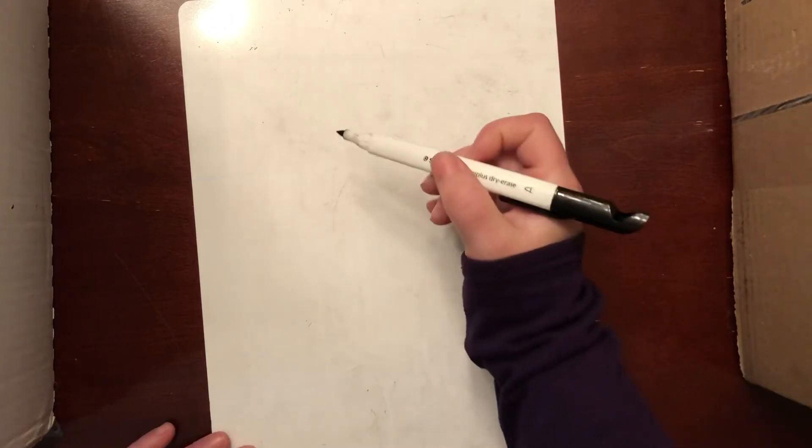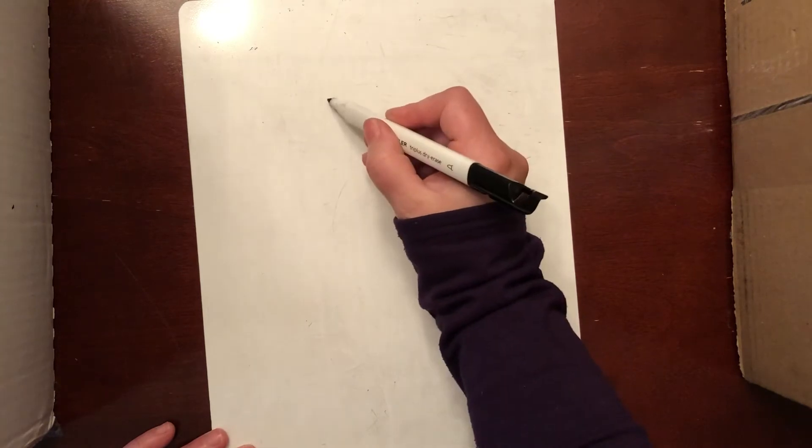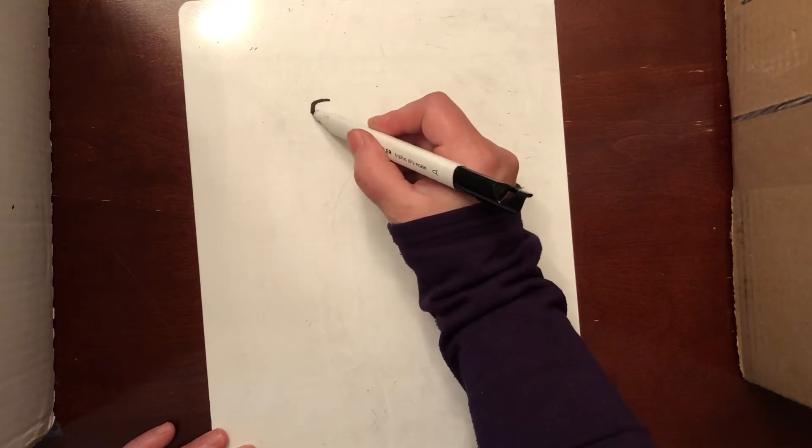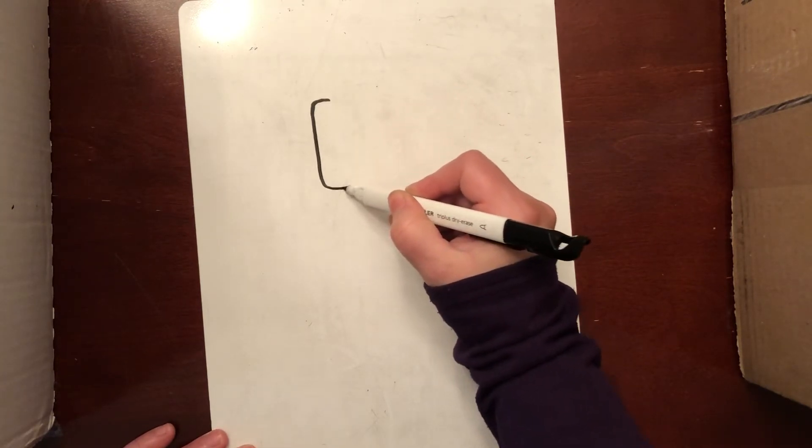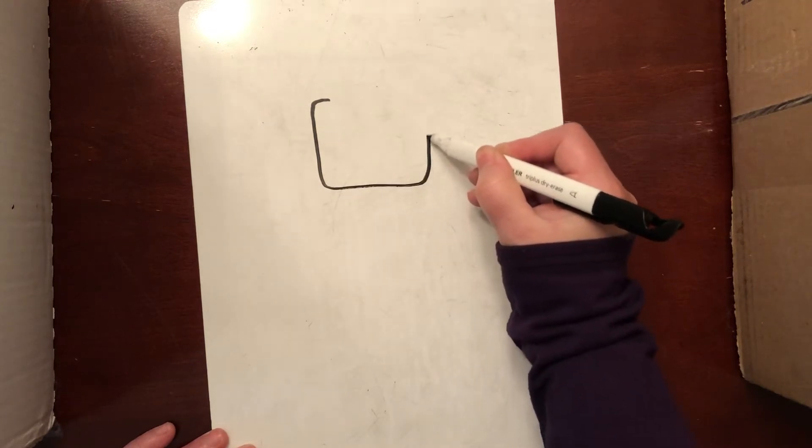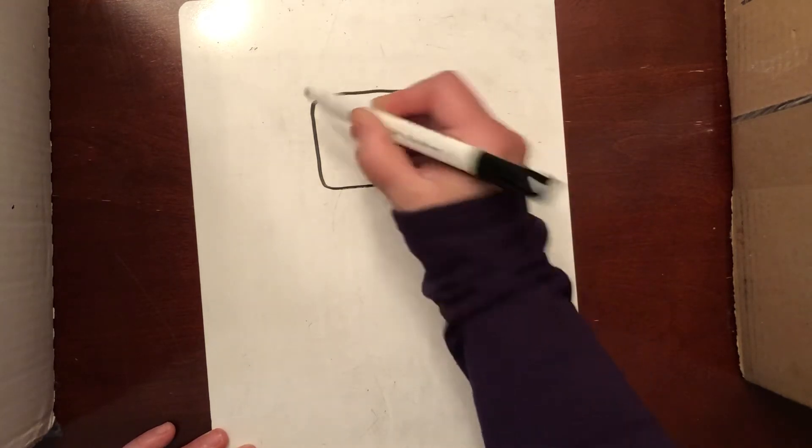We're going to start with our paper. I've turned mine sideways so that it's long and skinny. We're going to start with a square that has curved edges, curved vertices. It doesn't look like a vertex at all.